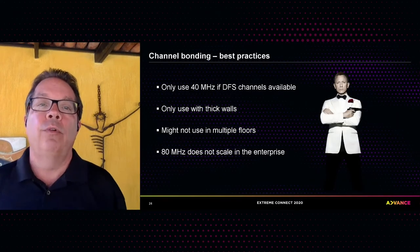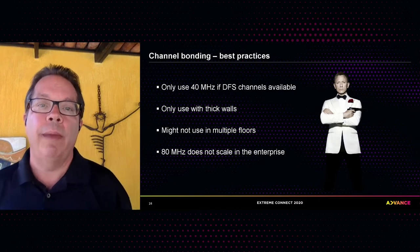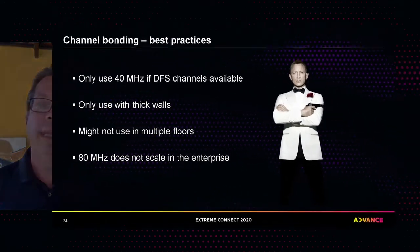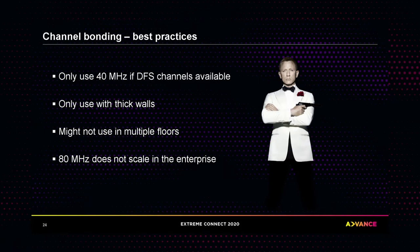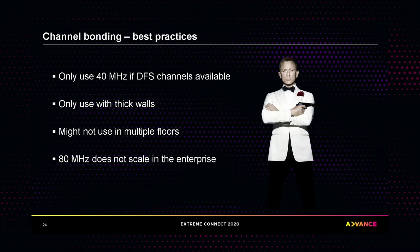Here are my rules for using 40 MHz channels: you must have DFS channels enabled — if not, don't attempt 40 MHz. I highly recommend thick walls; if you have one AP per room with drywall, CCI will be too much of a problem. You may not want to use it across multiple floors. And remember, 80 MHz simply does not scale in the enterprise — it's fine for one AP, but there isn't enough frequency space in the 5 GHz band.